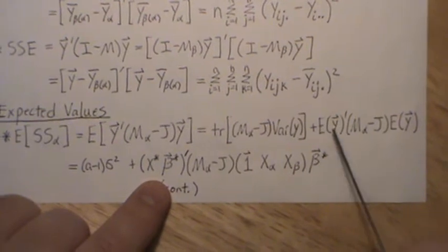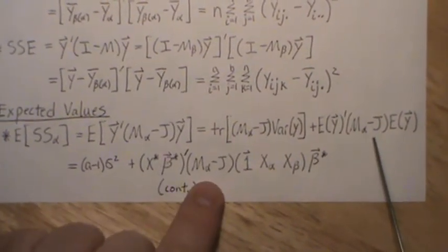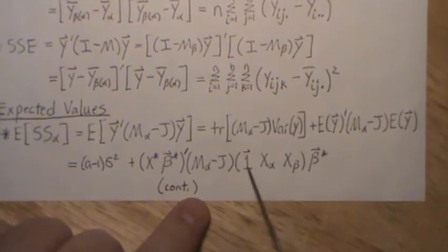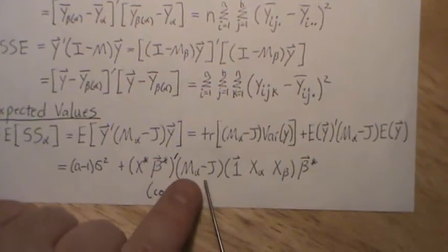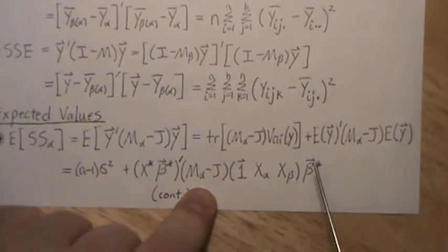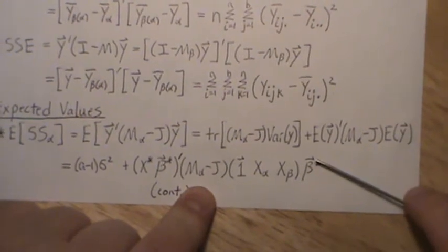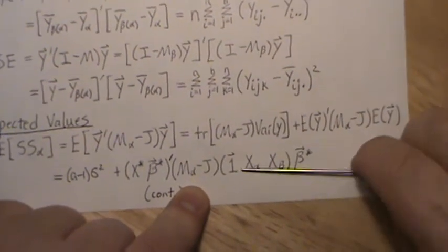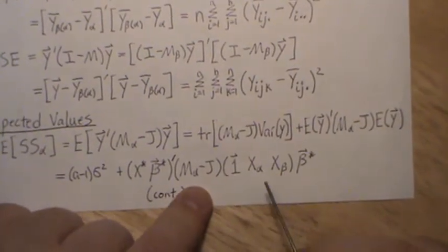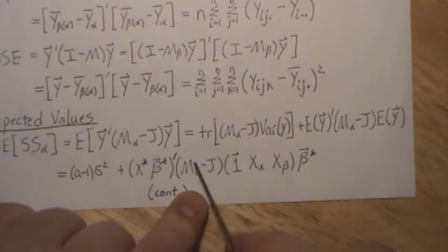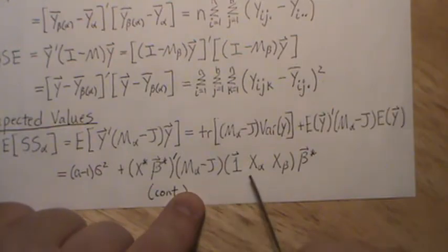The mean of y is x-star beta-star. We partition x-star and then take the idempotent matrix and multiply it through — one piece goes with x_alpha alpha and the other gets multiplied in separately. The beta vector consists of mu, alpha_1, alpha_2, up to alpha_a, and then beta_1, beta_2, through beta_b. When you do that multiplication, this matrix projects orthogonally to the one vector with respect to x_alpha, making that term zero, and we just recover the alpha terms. So we get (M_alpha minus J) times x_alpha alpha, plus that second piece.